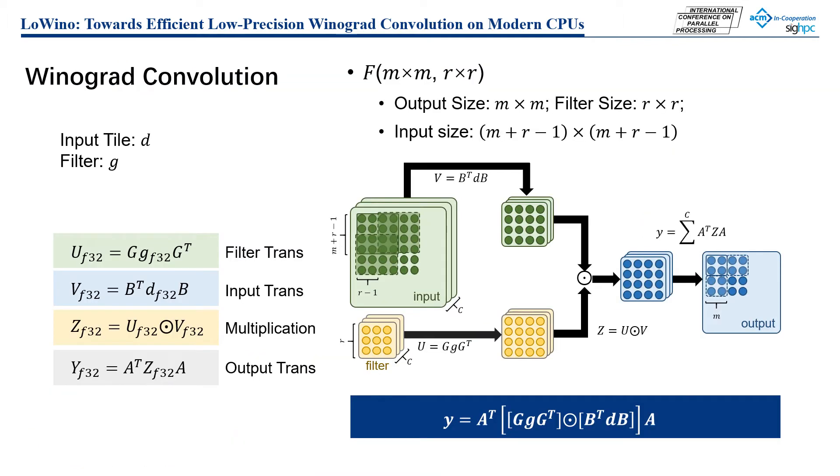First, let's look at the approach of full-precision Winograd convolution. In general, the Winograd convolution can be indicated by two hyperparameters, M and R, where M is the output size and R is the filter size.